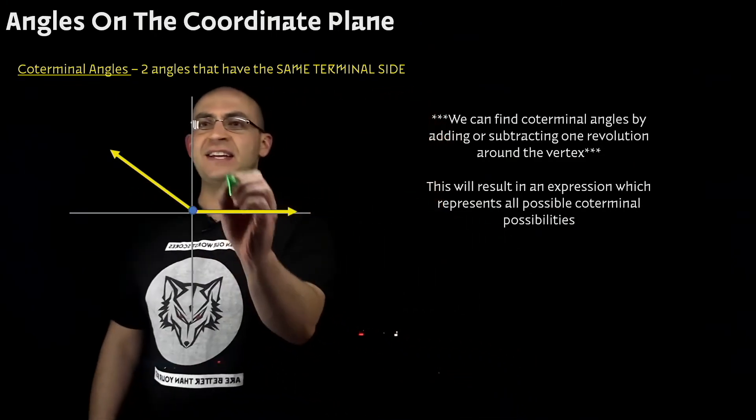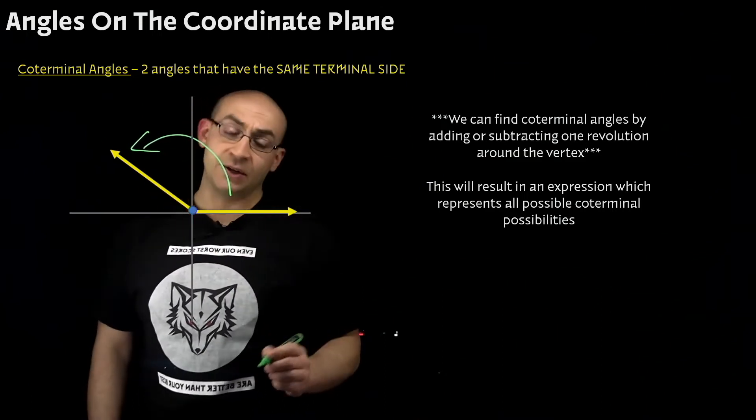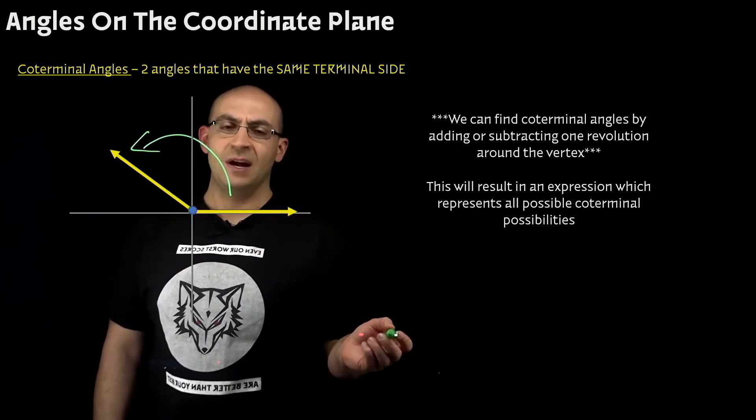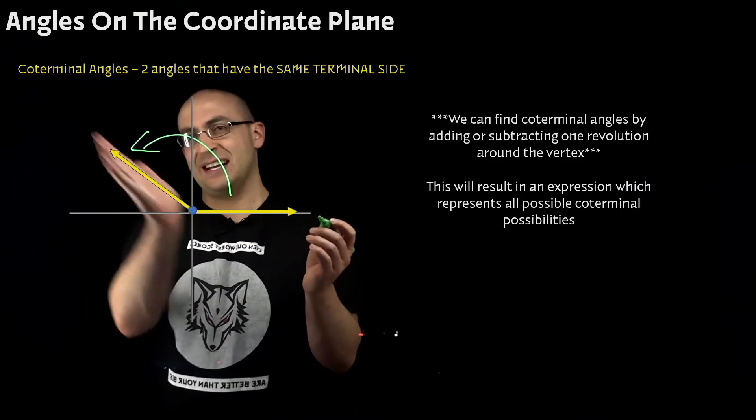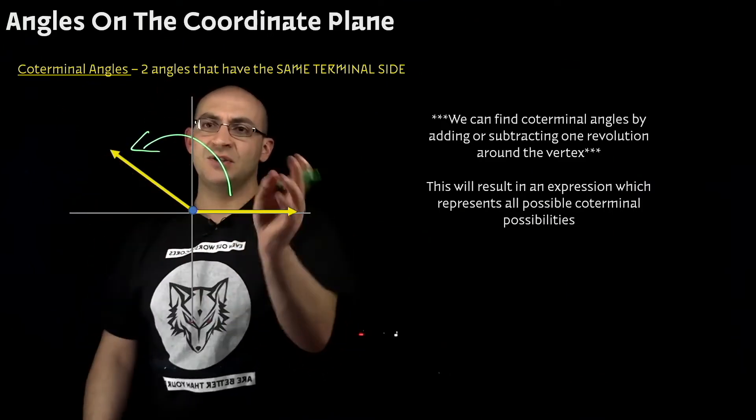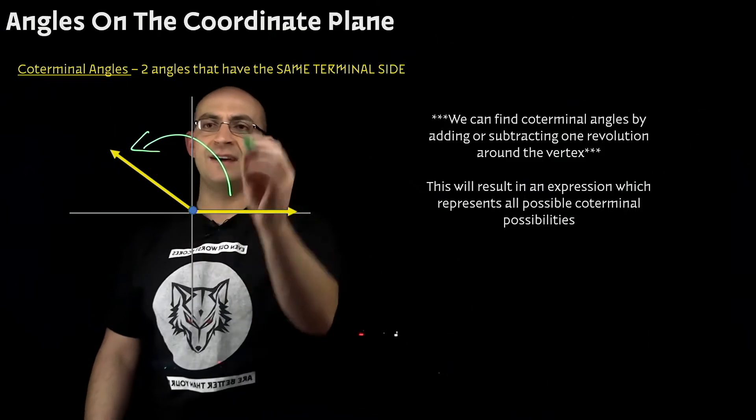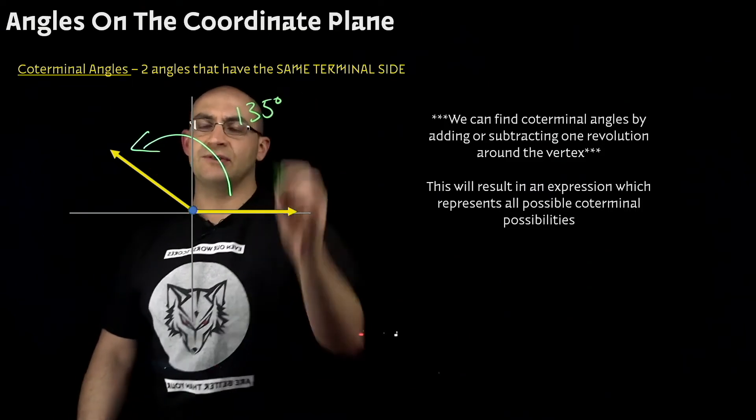So think of it like this. This is the initial value or the initial angle. It goes counterclockwise and it is some value. Let's say this is kind of halfway through this 90 degree. So if this is 90, this might be 45. Let's say this is a 135 degree angle.